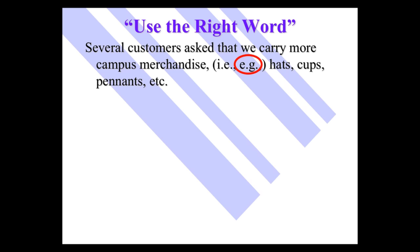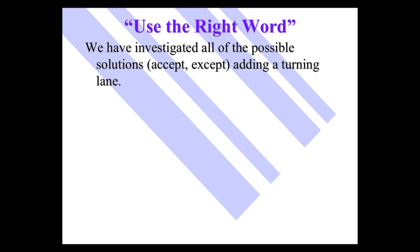What would be an example of i.e.? Items carrying the school logo. I'm explaining what I mean by campus merchandise. That is, items carrying the school logo. We have investigated all of the possible solutions, accept or except adding a turning lane. Unless you're getting a little sloppy here, you're probably going to get this one right. It is except. But that's when a lot of people get it wrong when they are not focusing.